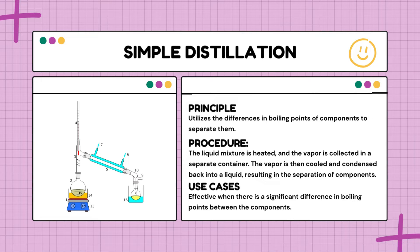Simple distillation gives extraordinary results when the components have a large difference in their boiling points. If the components mixed together have a large difference in boiling points, simple distillation becomes a reliable method for separating them into individual components.